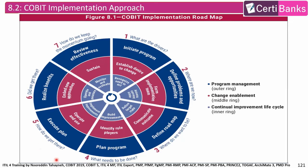In the fifth phase — how do we get there? — we operate and use as part of Change Enablement, and implement improvements as part of the Continual Improvement Life Cycle. In the sixth phase — did we get there? — we realize benefits as part of Program Management, embed new approaches as part of Change Enablement, and operate and measure as part of the Continual Improvement Life Cycle. In the seventh phase — how do we keep the momentum going? — we review effectiveness as part of Program Management, sustain as part of Change Enablement, and monitor and evaluate as part of the Continual Improvement Life Cycle.